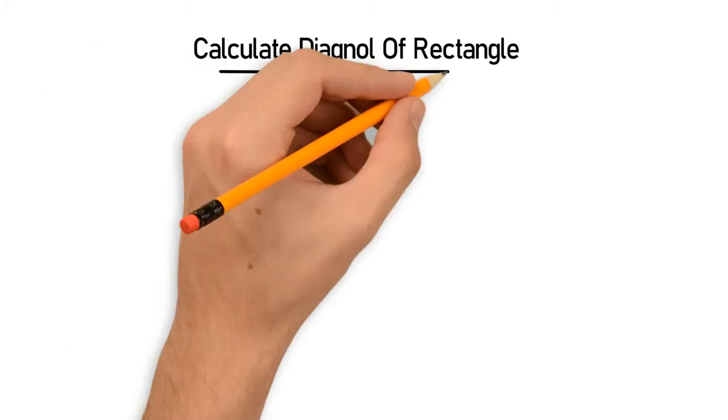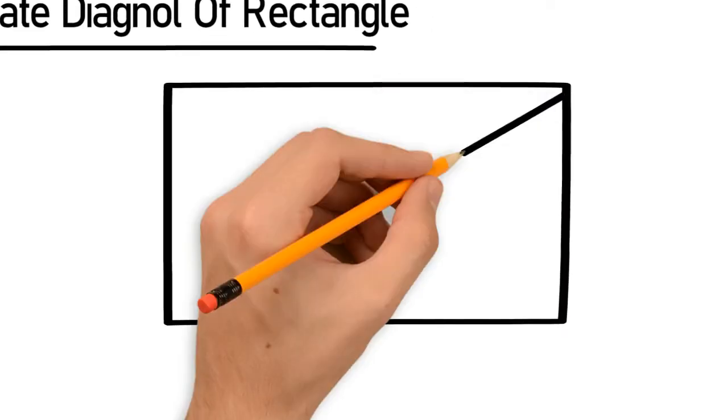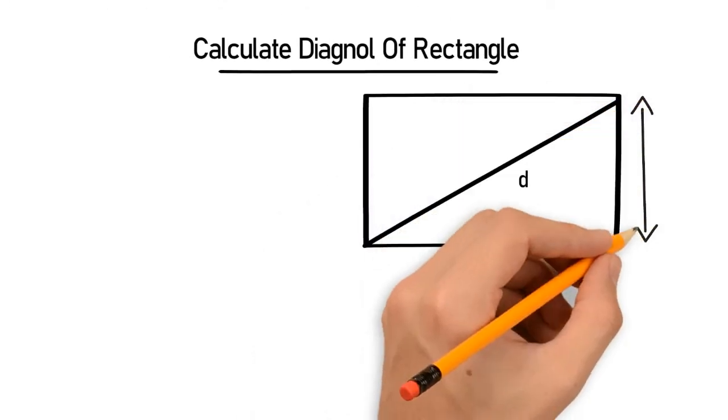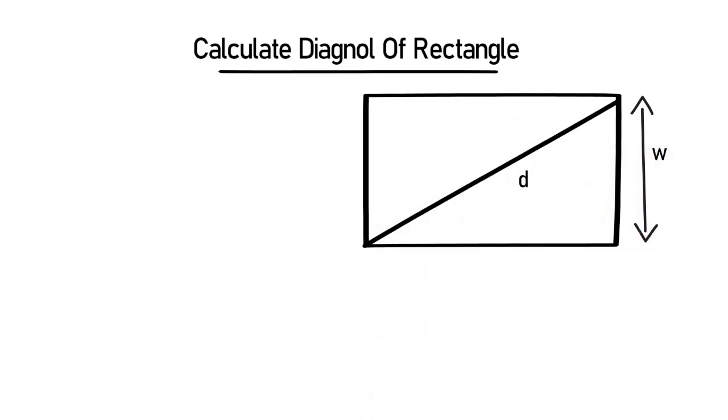First of all, let's draw the rectangle. This is the diagonal denoted by d. This portion is the width w, and this portion is the length L.